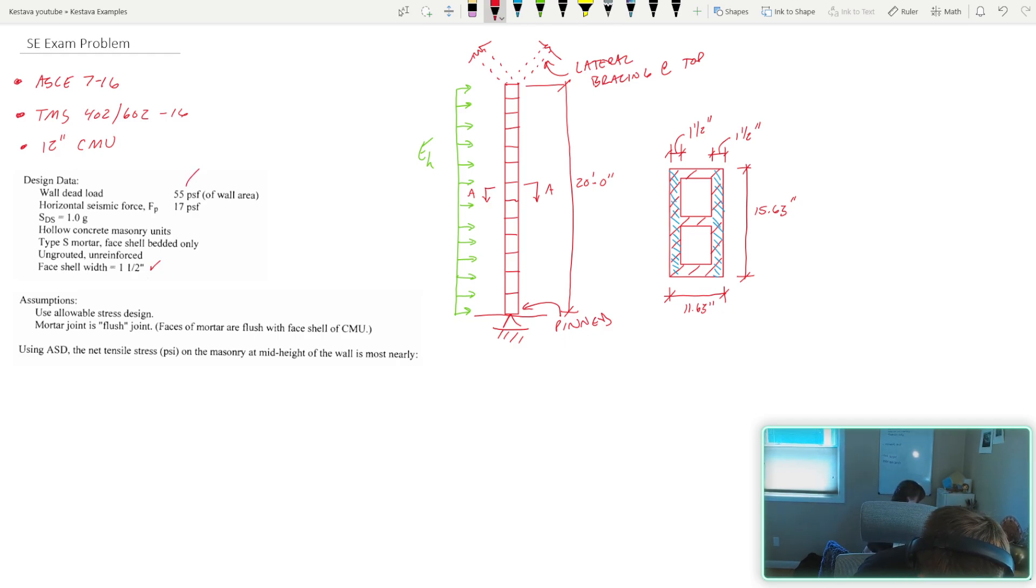This wall self-weight is 55 PSF, so we don't have to calculate ourselves. The horizontal seismic force, F sub P, is 17 PSF, so we also don't need to calculate here today. Our SDS is 1.0. We have hollow concrete masonry units, type S mortar, face shell bedded only. I'll draw on our figure here. That means our mortar is only going on the face shell. It's not going into any of the web zones in the middle here. So everything that I'm drawing in green here is not getting any mortar, and that affects our design.